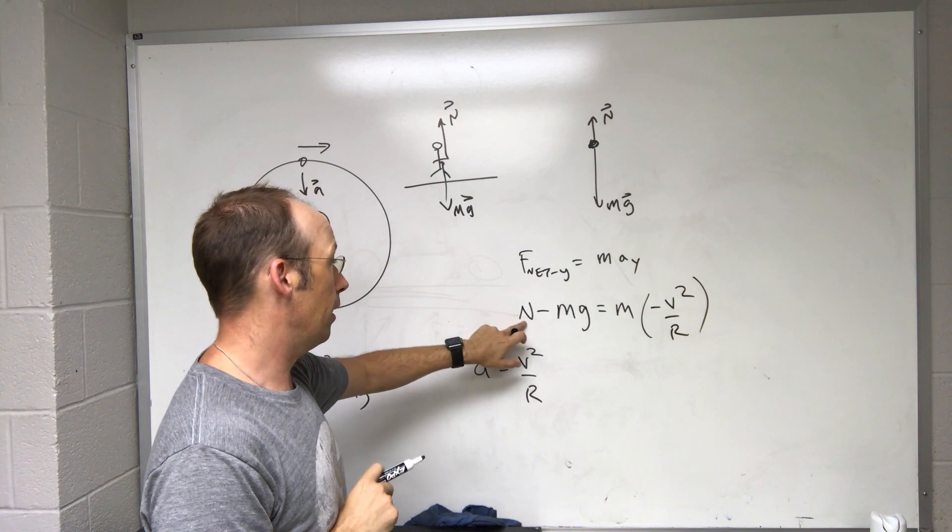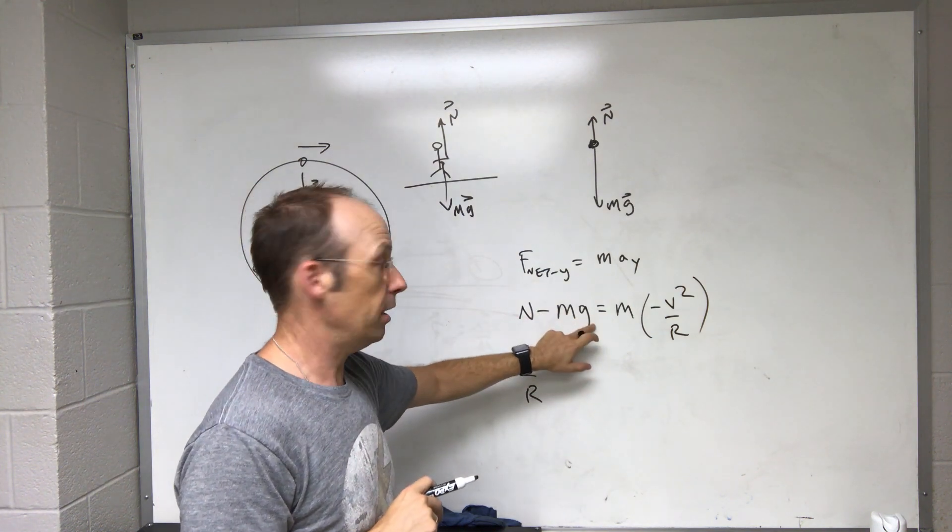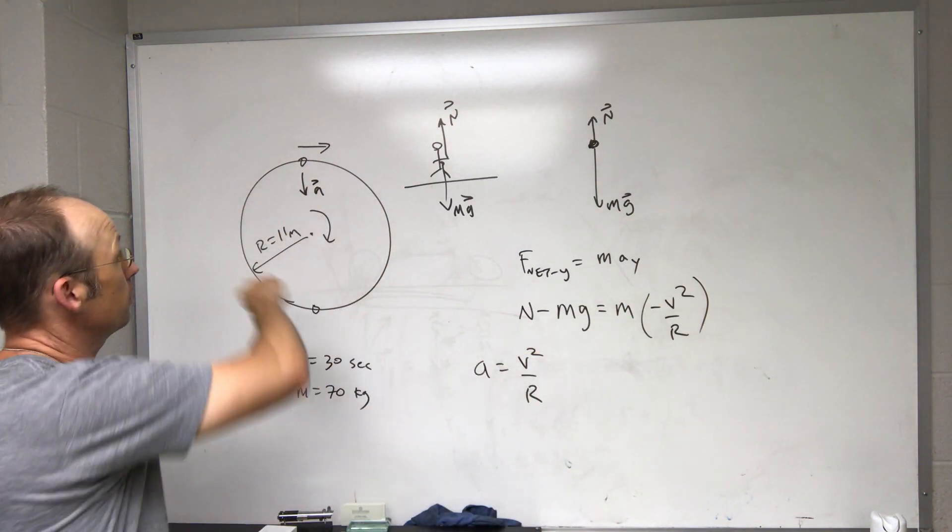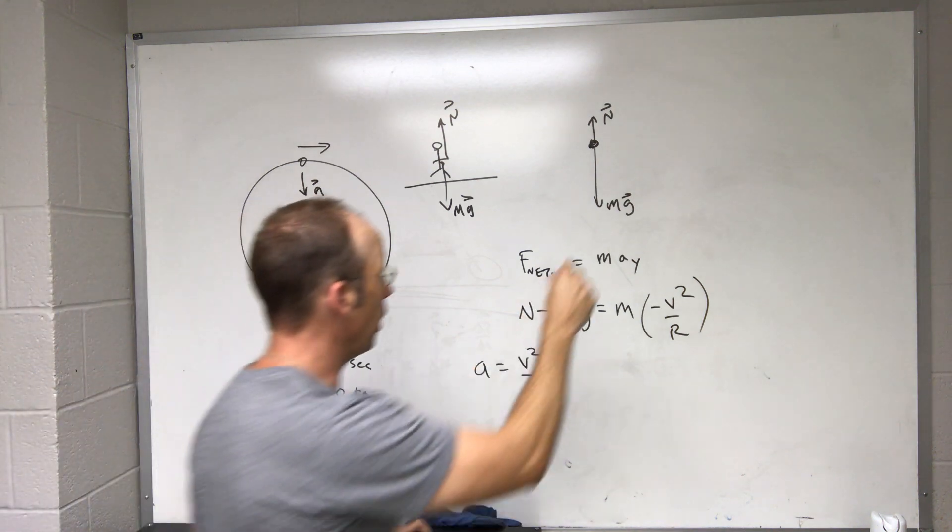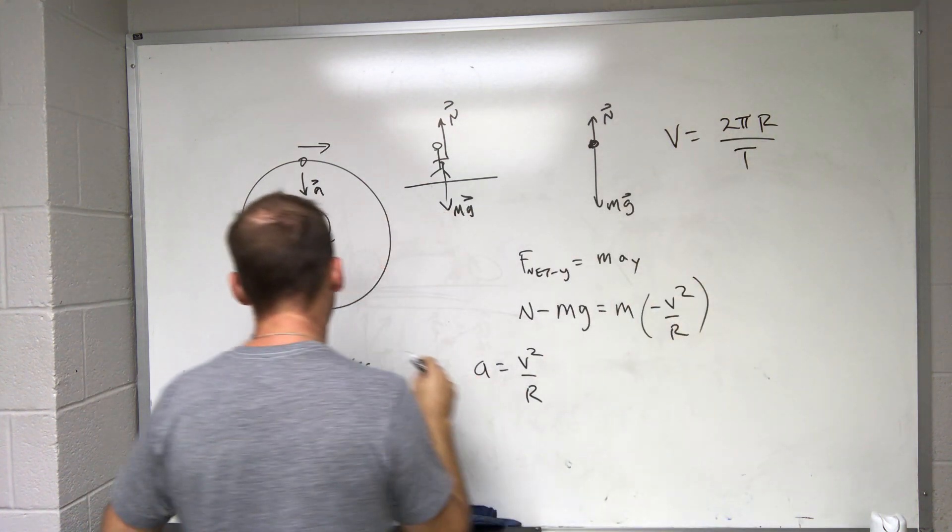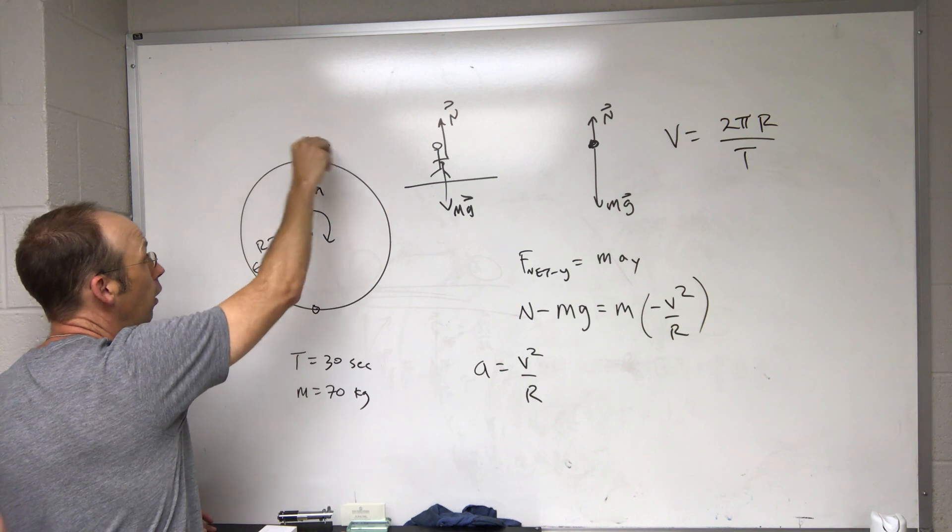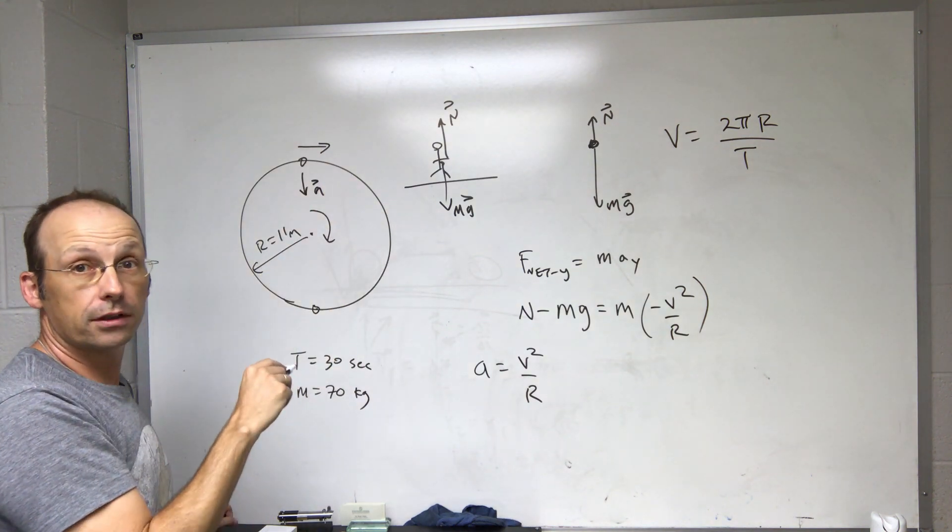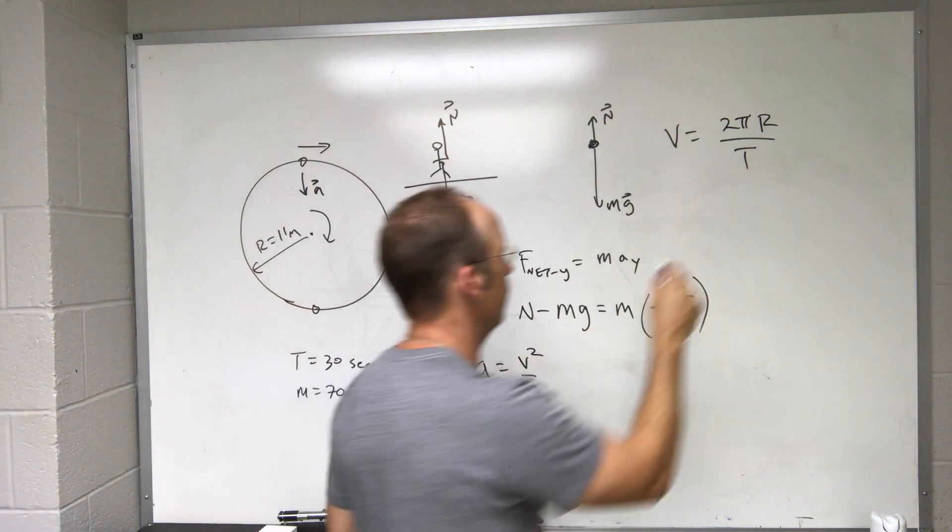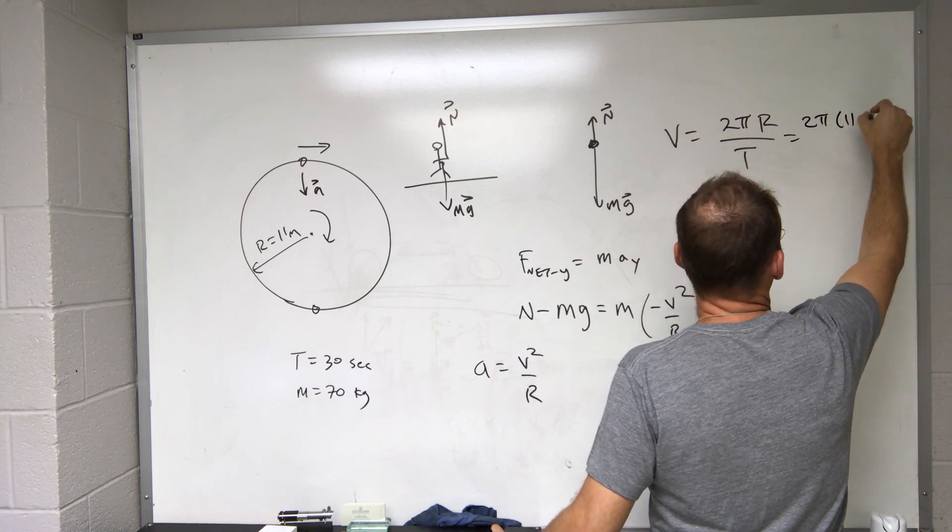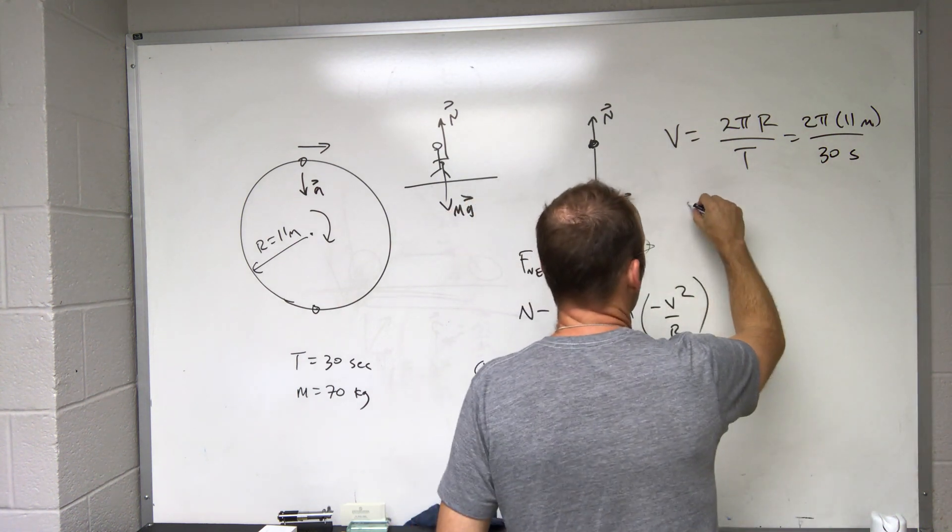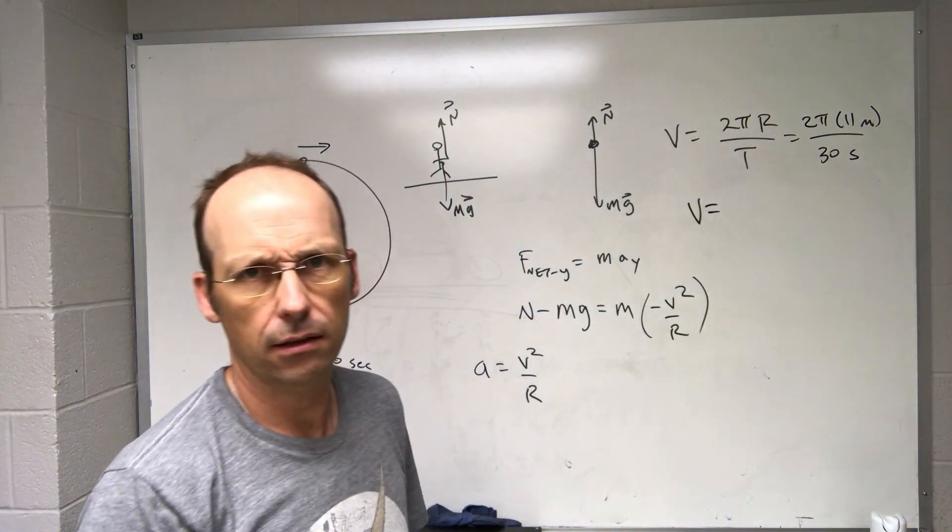So I want to solve for n. I know the mass. I know g. I know r, but I don't know v. So let's find the velocity, the speed that this thing goes around. I can write v equals 2πr over t. If you go all the way around the Ferris wheel, you went through the circumference of that circle, which is 2πr. And it took a time t. So the velocity in this case would be 2π times 11 meters divided by 30 seconds.